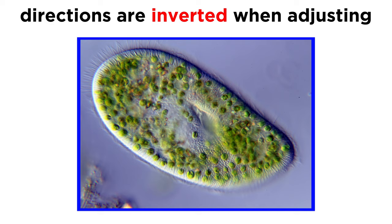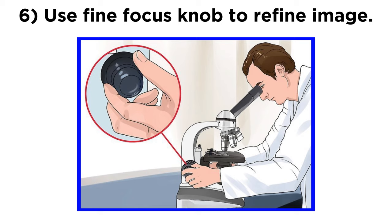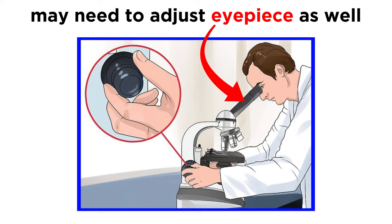A tip for this is that the image in the microscope is inverted, so when you move the slide to the right, it will move to the left in your field of view, and vice versa. Next, use the fine adjustment knob to refine the image.